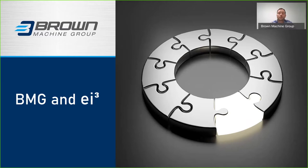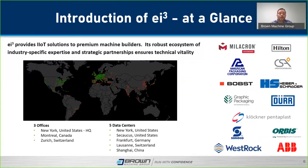Now let me talk about Brown Machine Group and EI3. Brown Machine Group has over 60 years of thermal forming machine experience, servicing 65 countries worldwide. After our latest acquisition of Axatronics, Brown Machine Group now offers a full suite of turnkey solutions for thermal forming and packaging systems for the food and beverage market — we engineer, design, and build with confidence, so you can run with confidence.